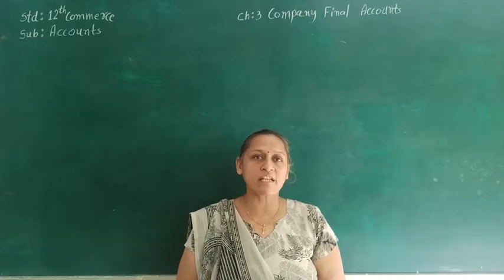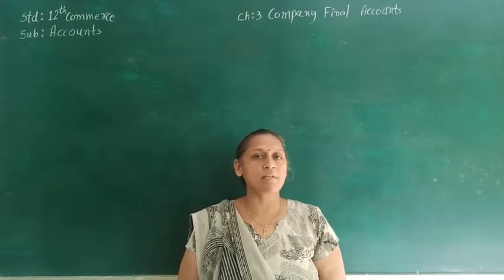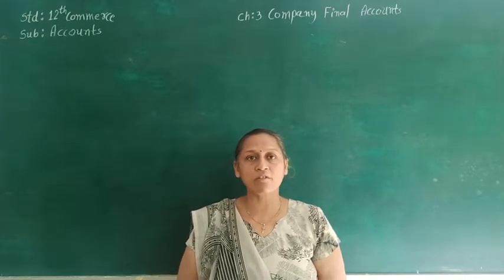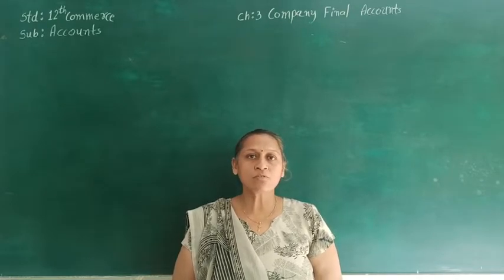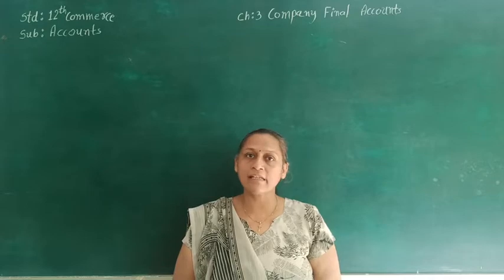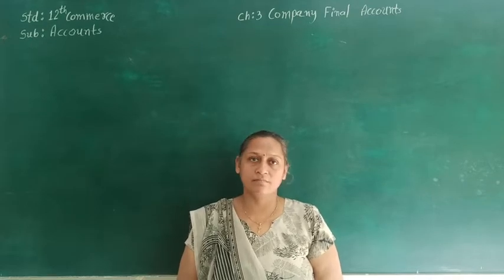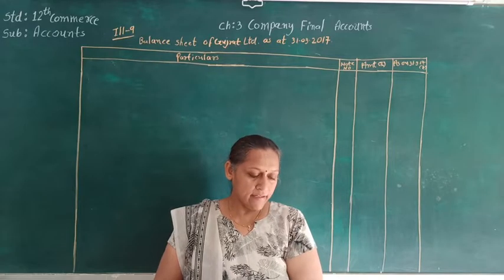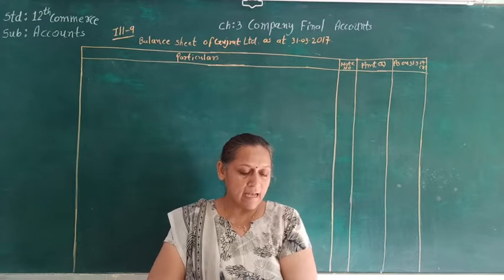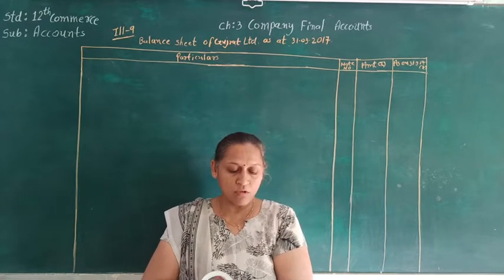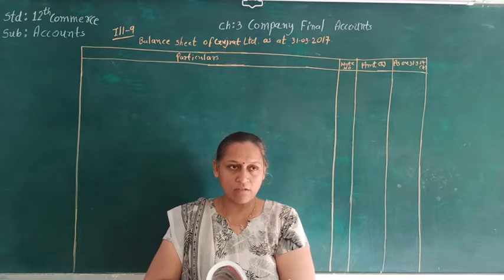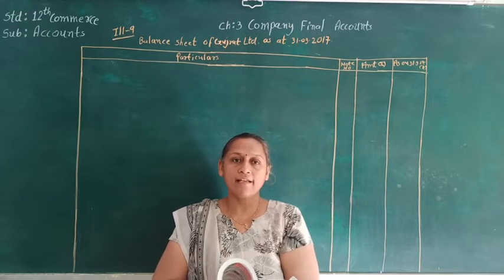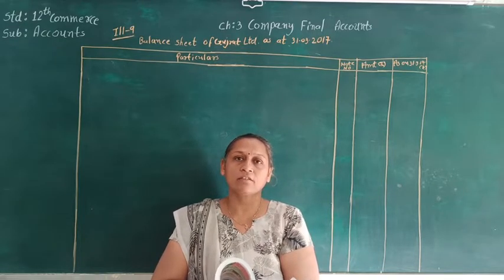Hello students, today we are going to see chapter number 3 of standard 12 commerce subject accounts. Today again we are going to see the asset side of the balance sheet, where we are going to bifurcate the asset side into the main head as well as subhead. Let's see illustration number 9. Following balances are extracted from the books of Gujarat Limited as on 31st March. Prepare the asset side of the balance sheet as per schedule 3 of the Companies Act 2013.